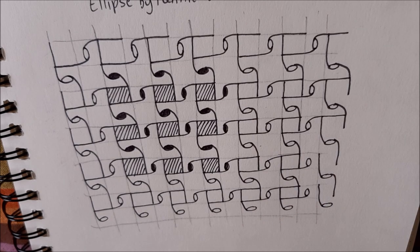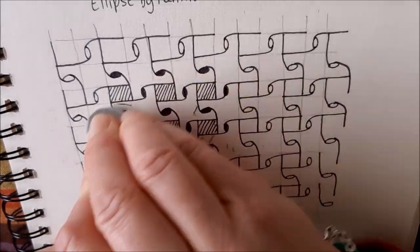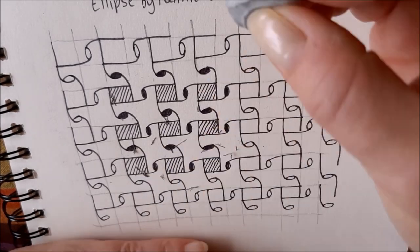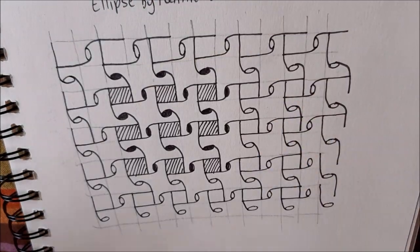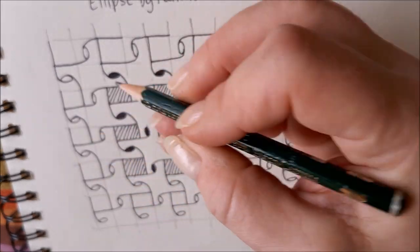Now I will add some shading. Of course I first can erase my grid line. Thank you grid line for your help, for guiding me. And now I get my B pencil, which is a bit soft.